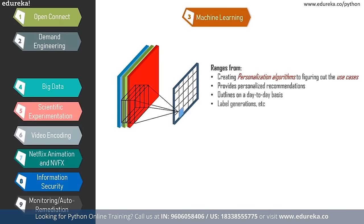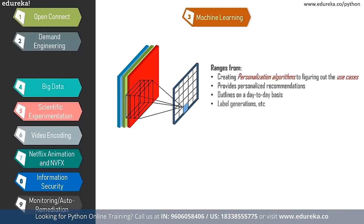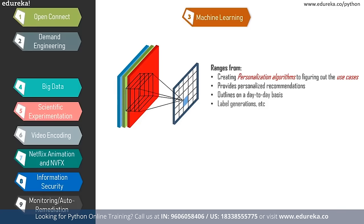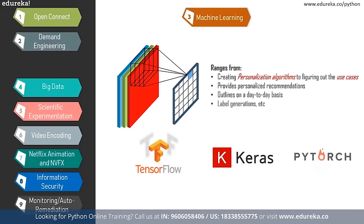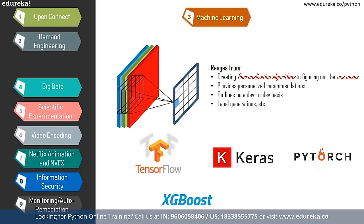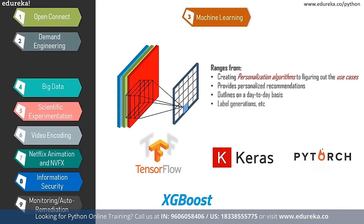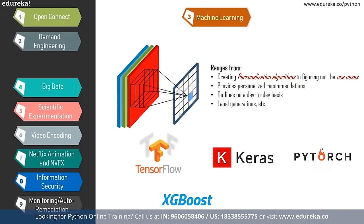For machine learning, Netflix uses Python to create personalization algorithms and figure out use cases. These algorithms help train machine learning models, provide personalized recommendations, outline day-to-day operations, and handle label generation. Libraries required include TensorFlow, Keras, and PyTorch for deep neural networks, and XGBoost and LightGBM for gradient-boosted decision trees. Netflix has also developed higher-level libraries and uses Metaflow to create machine learning projects.